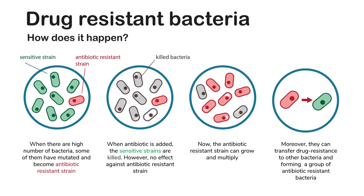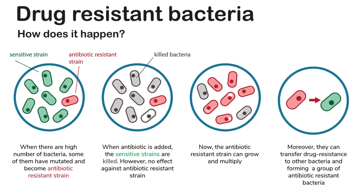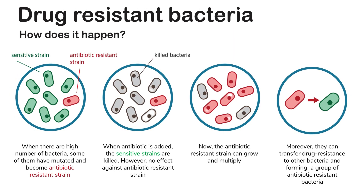Let's learn how drug resistance happens. When there are a high number of bacteria, some of them mutate and become antibiotic-resistant strains. When an antibiotic is added, the sensitive strains are killed. However, no effect is seen against antibiotic-resistant strains. The antibiotic-resistant strains can then grow and multiply, and can also transfer drug resistance to other bacteria, forming a group of antibiotic-resistant bacteria.